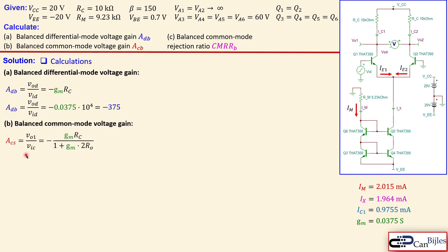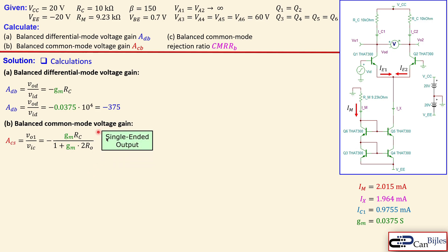For the balanced common mode voltage gain, we first examine the single-ended common mode voltage gain, which is easier to understand. VO1, the collector voltage of Q1, divided by the common mode input voltage — where both bases are connected together with a single signal applied — gives an expression with a minus sign similar to the differential gain, but with a denominator of one plus gm times two times Ro. Here Ro is the impedance looking into the collector of Q5.